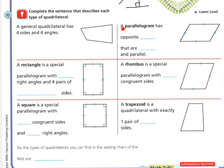The next one we're going to look at is a parallelogram. A parallelogram has opposite sides that are congruent and parallel. We know they are congruent because this side and this side have one tick mark, meaning they're the exact same length, and these two have two tick marks, meaning those two are the exact same length. A parallelogram means the sides have to be parallel.